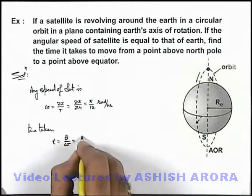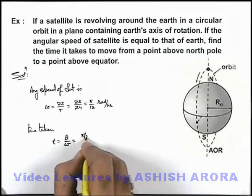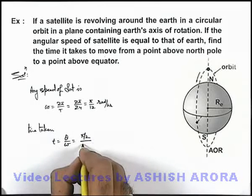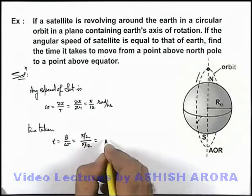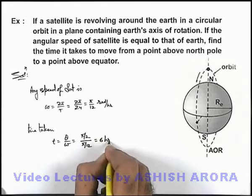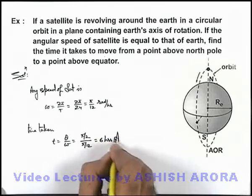The value of θ is π/2, divided by ω which is π/12. So this gives 6 hours — that is the answer to this problem.